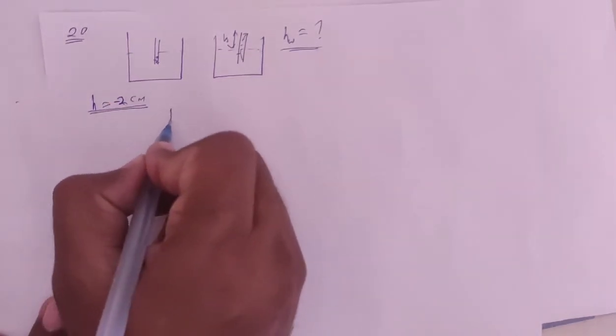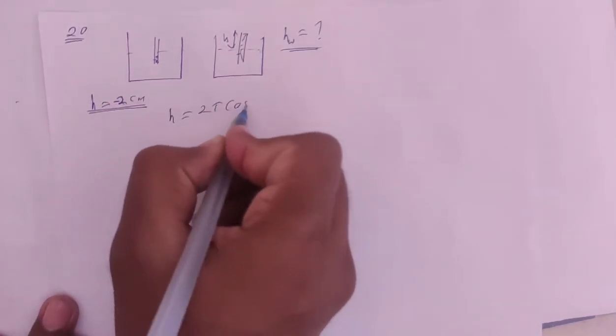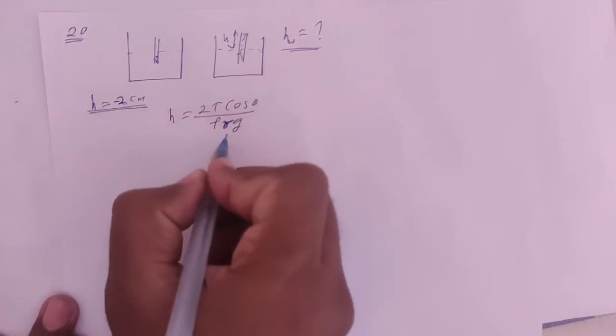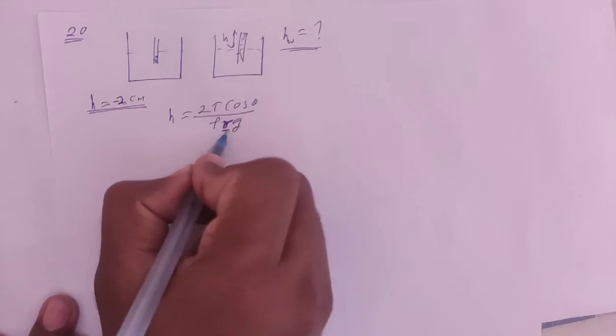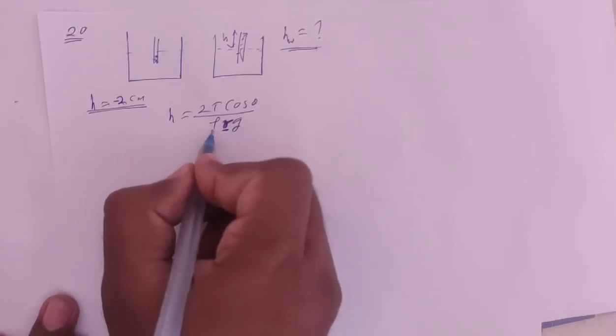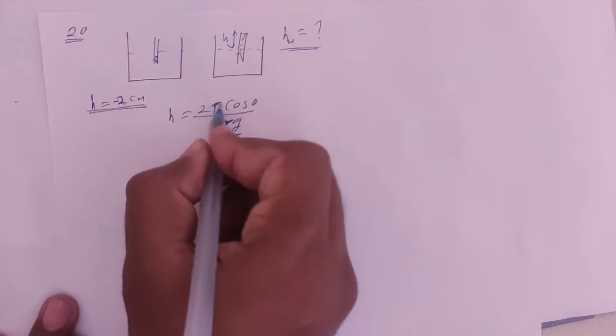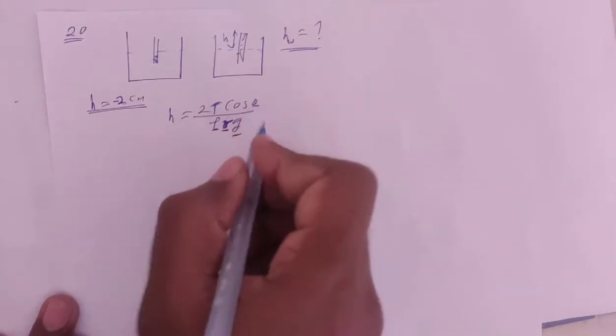The capillary rise formula is 2t cos theta by rho rg. Where r is the capillary's inner radius, rho is density of water, g is gravity, t is surface tension, and theta is the contact angle.